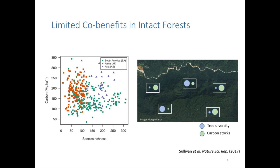These patterns and inferences are predominantly from intact forest landscapes. But intact forest landscapes are now pretty much the minority, because most forests in the tropics today are human-dominated. So the question we wanted to ask was: how would these relationships pan out in human-modified tropical forest landscapes?